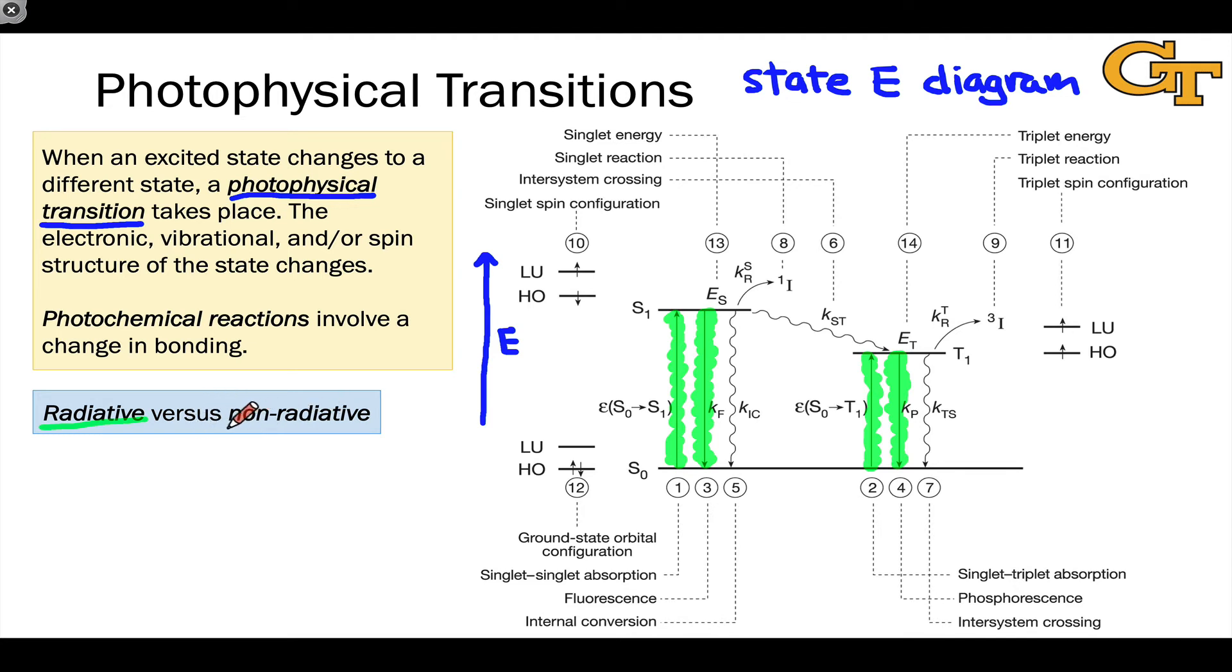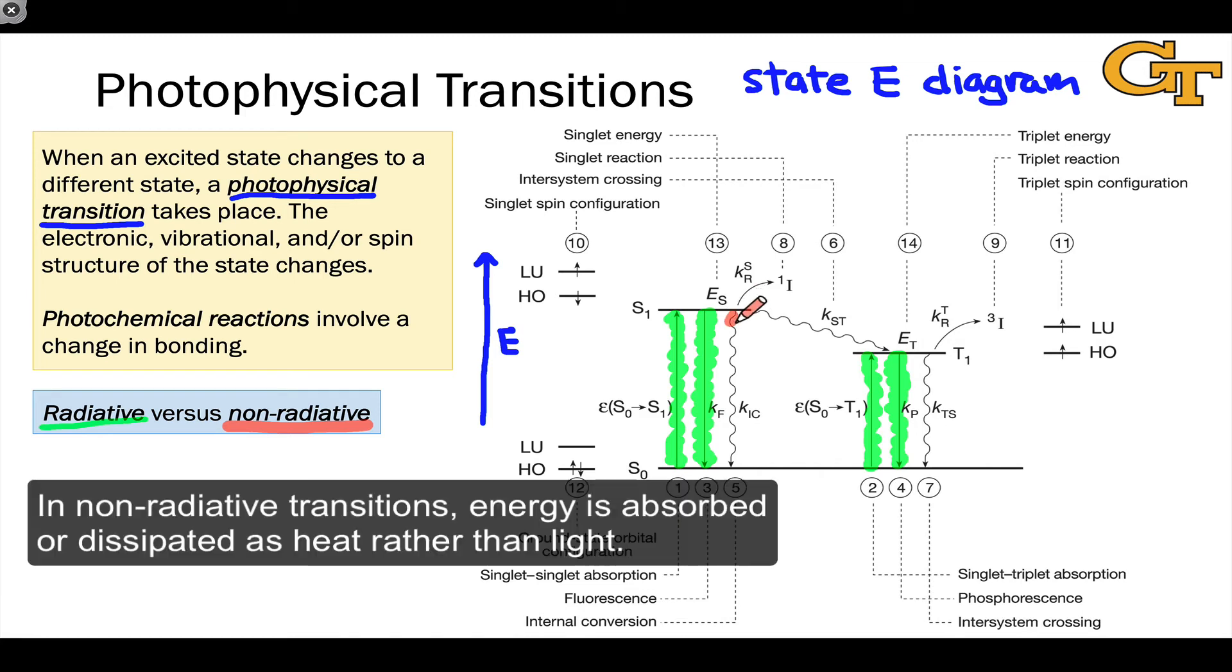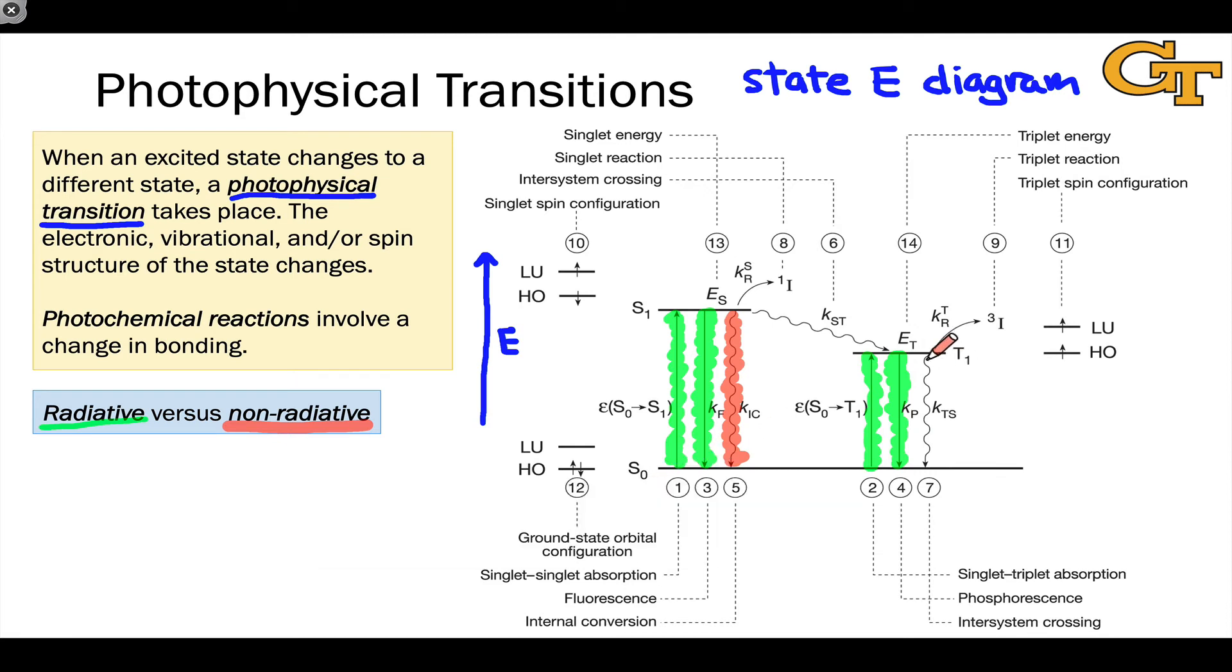If a radiative transition involves absorption or emission of a photon, a non-radiative process does not. The squiggly lines that you see on this diagram represent non-radiative transitions. For example, here we're seeing the non-radiative relaxation of the first excited singlet state, S1, back down to the ground state, S0. Here we're seeing relaxation without emission of a photon of the triplet state back to the singlet ground state. We also often see inter-system crossing from a singlet state to a triplet state, represented as process six in the diagram.